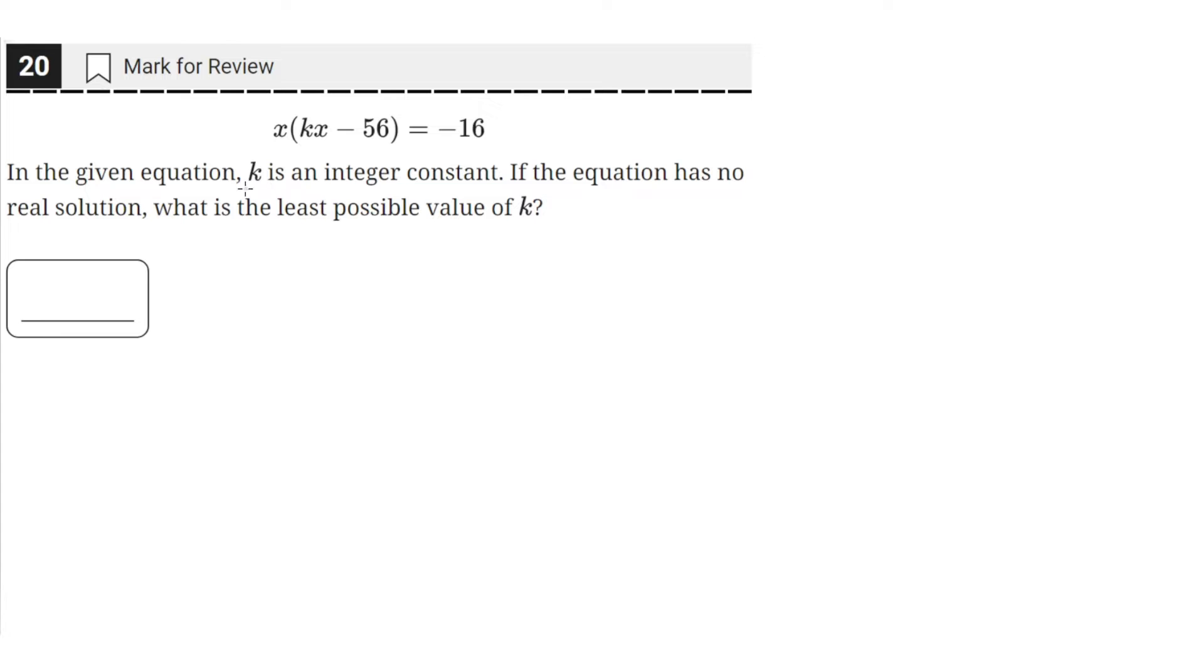In the given equation, k is an integer constant. If the equation has no real solution, what is the least possible value of k? Okay, so we have this equation here: x times kx minus 56 equals negative 16.